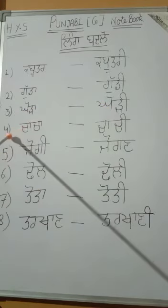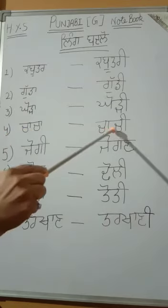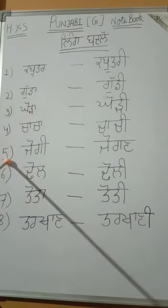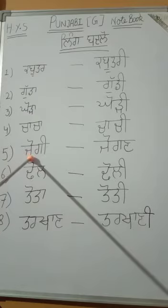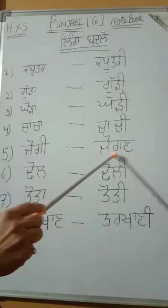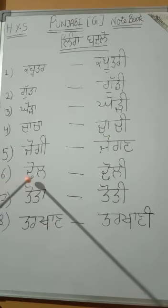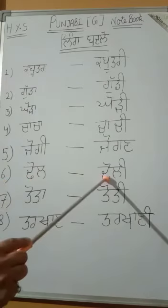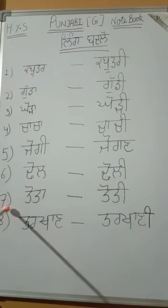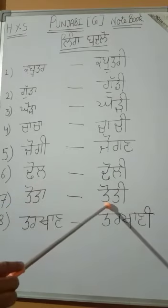Number 4: write Chacha — Chachi. Number 5: write Jogi — Jogan. Number 6: write Tol — Toli. Number 7: write Tota — Toti.